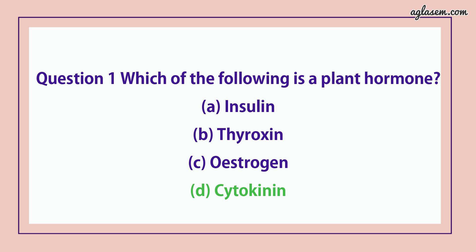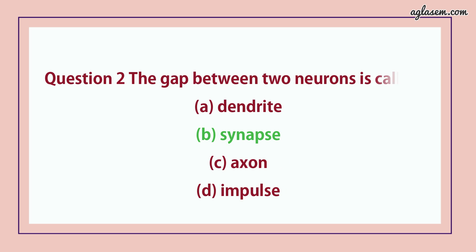Question number 2 says, the gap between two neurons is called? Answer is B, i.e. synapse.